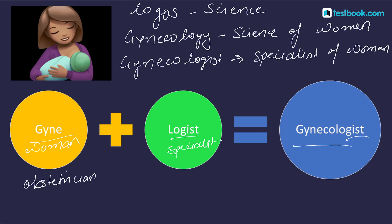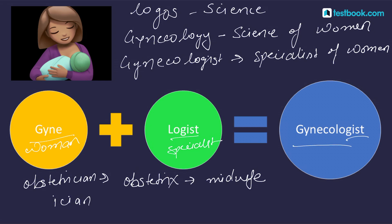The word obstetrician derives from Latin obstetric, meaning midwife, which in turn has its source in a Latin verb meaning 'to stand.' The midwife stands in front of the woman in labor to aid in the delivery of the infant. The suffix -ician, as in obstetrician, physician, musician, electrician, means 'expert.'